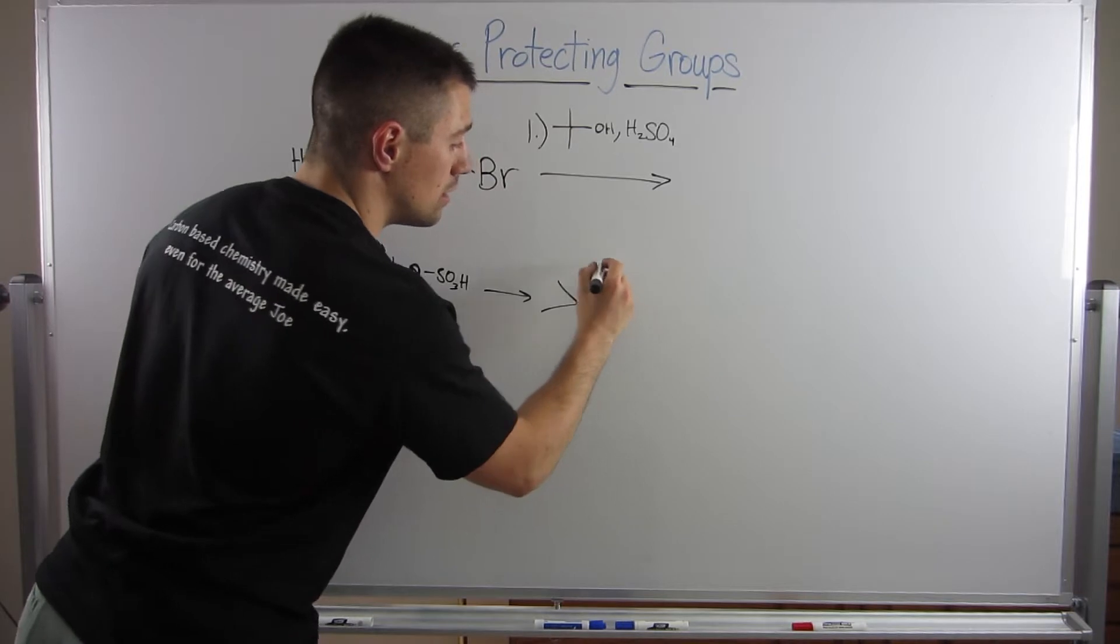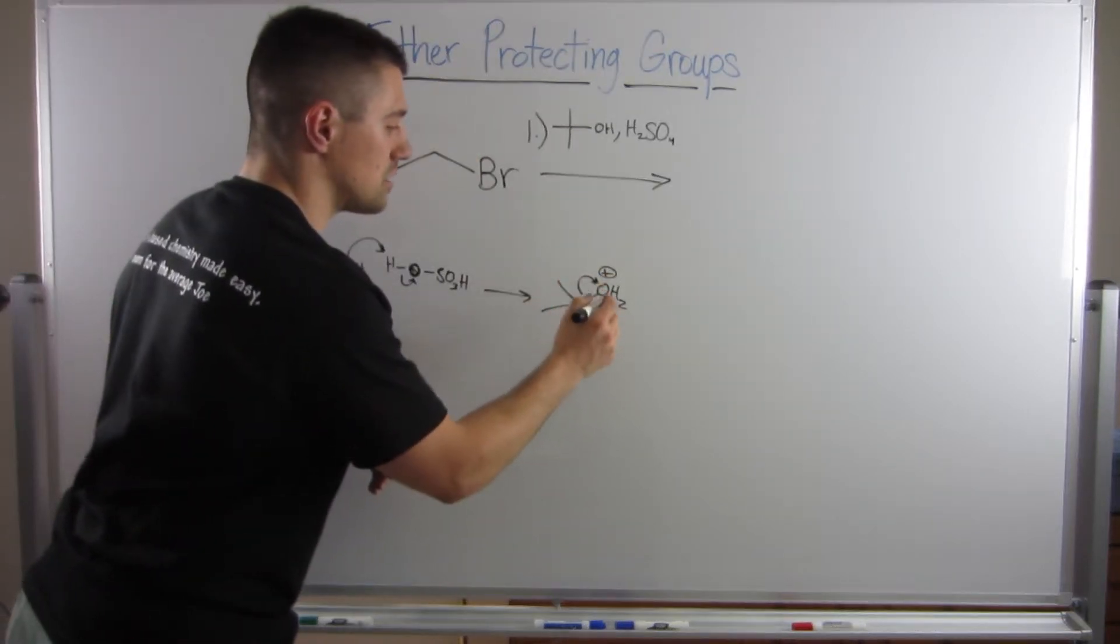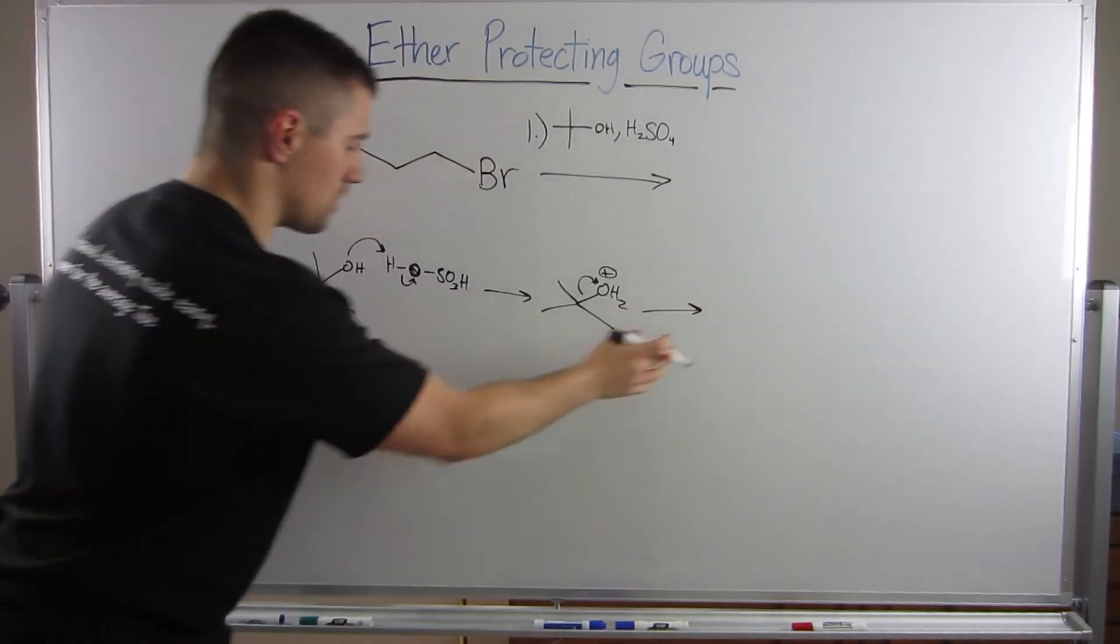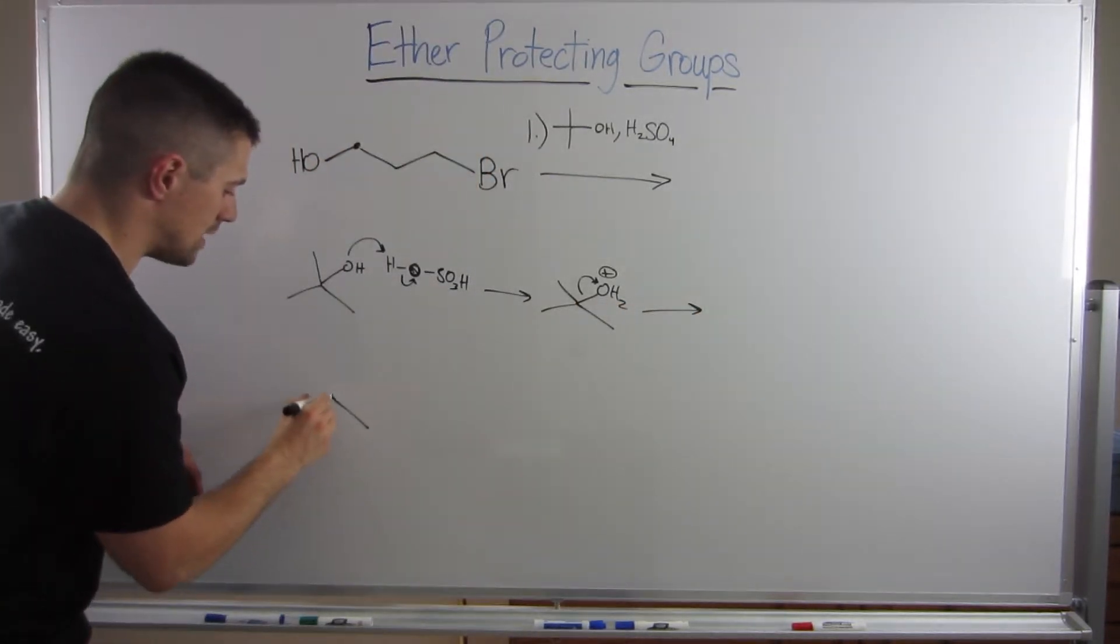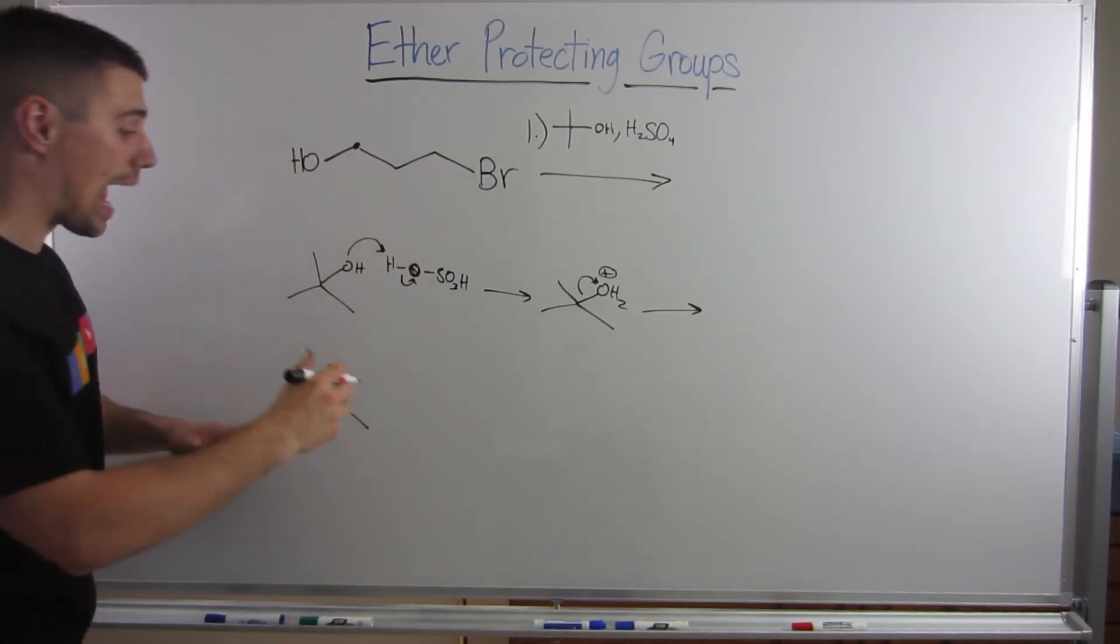So now we have water, right? Tertiary carbon, good leaving group. This thing will leave through solvolysis. I'm going to draw this over here. Now we have a carbocation. This is what your molecule will attack.